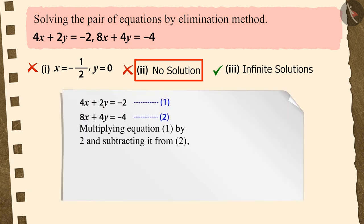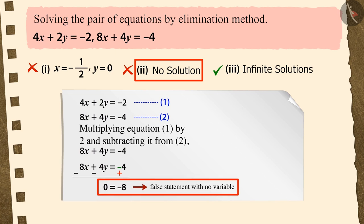Because to eliminate a variable in the given pair of linear equations, you multiply equation 1 by 2 and then subtract it from equation 2. Now, you forgot to change the negative sign to a positive sign on the RHS because of which we get a false statement with no variable. This shows that the pair of linear equations does not have a solution.